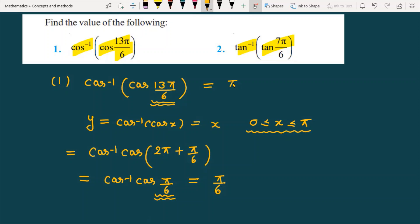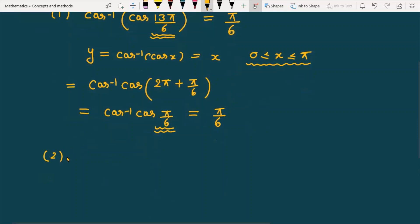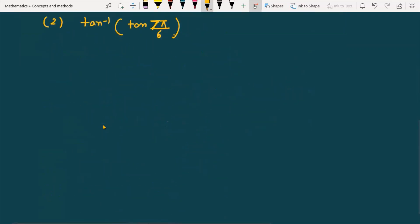Finally the answer of the first problem is π upon 6. Now let's discuss the second question. You can see question number 2 is tan inverse, that is tangent of 7π upon 6. This problem needs to be converted to simplest form.